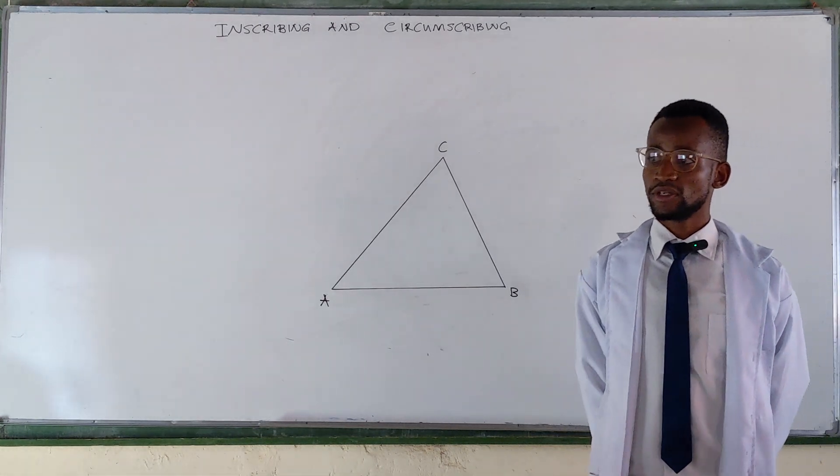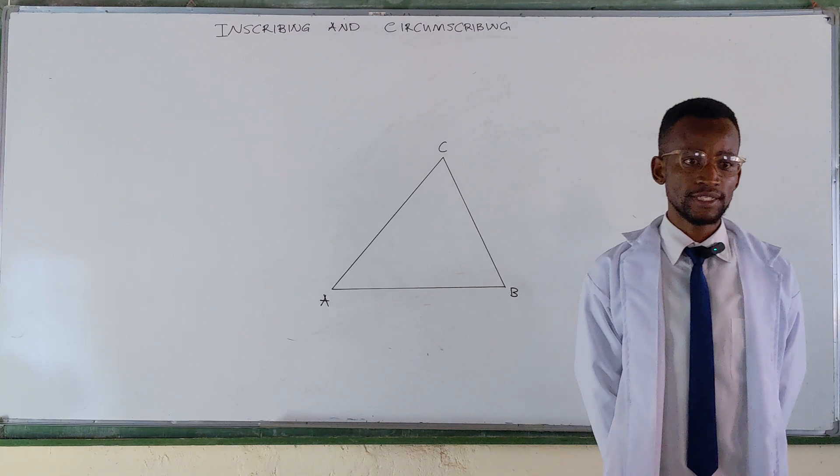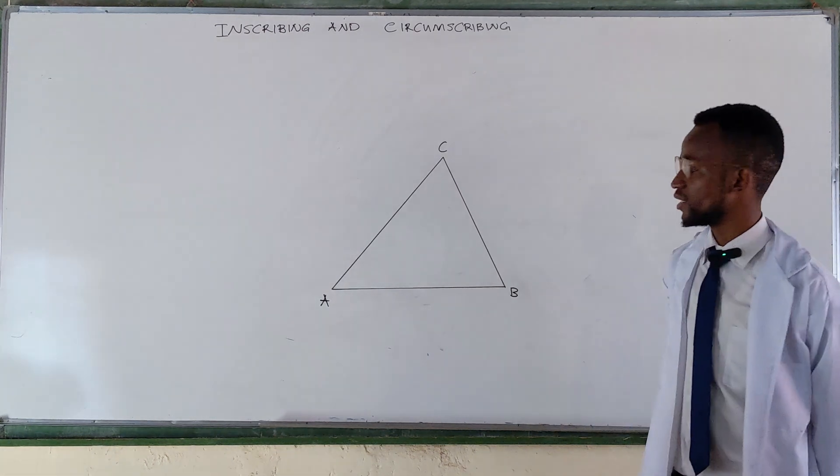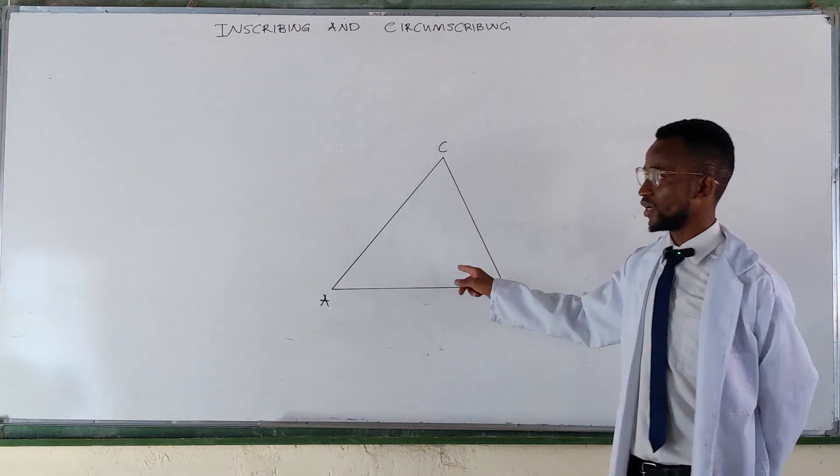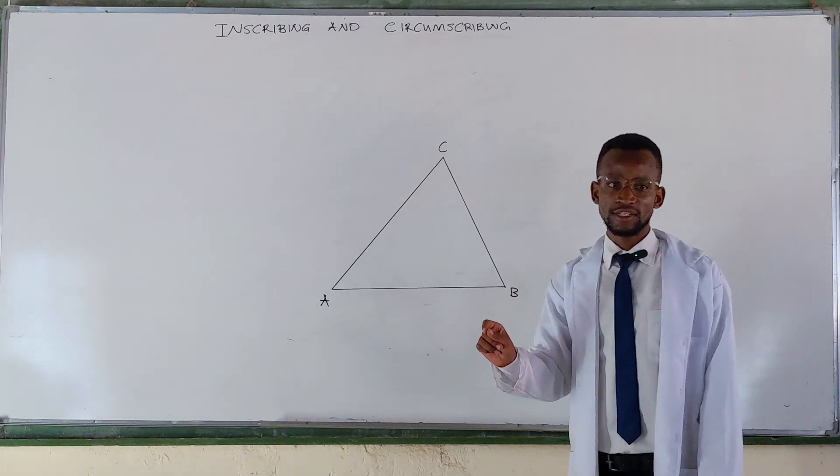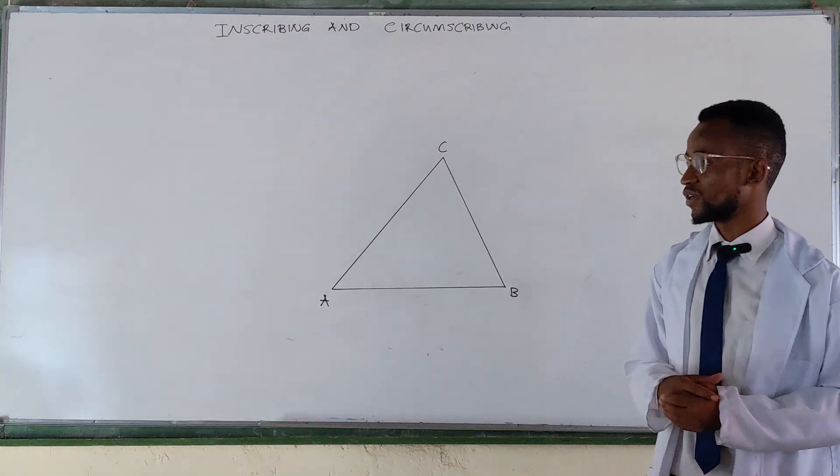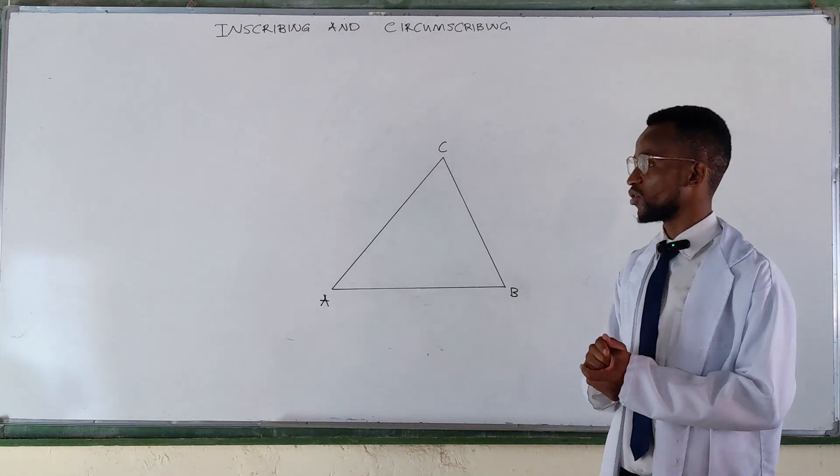So we want to draw an inscribed circle, and we know that an inscribed circle is a circle that is drawn inside a given triangle such that the three sides of the triangle are touching as tangents to that circle or on the circumference of the given circle that you want to draw.